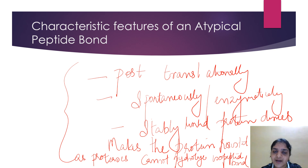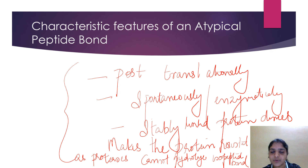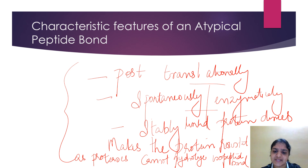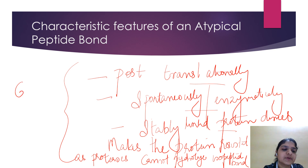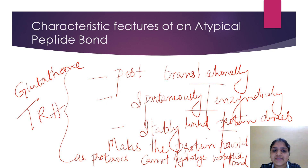Characteristic features of the atypical peptide bond: it can occur post-translationally and can be formed spontaneously or enzymatically. It can produce stably linked protein dimers and multiprotein complexes, and it makes the protein resistant because proteases — the protein-digesting enzymes — cannot hydrolyze the isopeptide bond. Examples include glutathione and thyrotropin-releasing hormone.